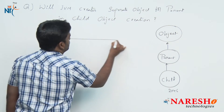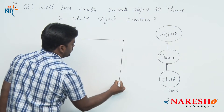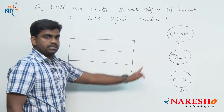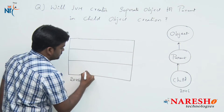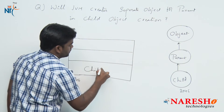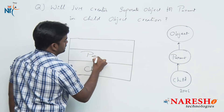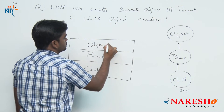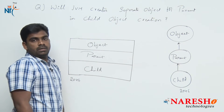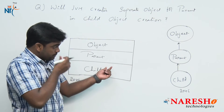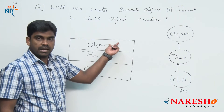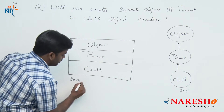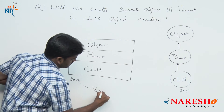Combinedly, only one object will be created. This single block contains child object functionality, parent object functionality, and Object class functionality. All the classes' functionality — all the objects' functionality — is available in this one block only, and here there is only one object reference available.